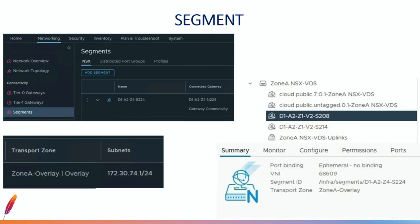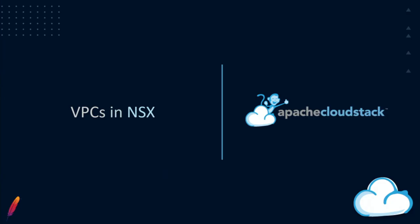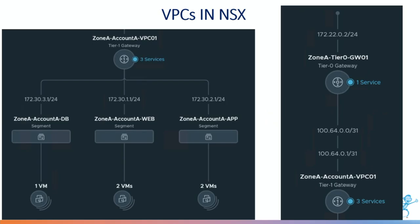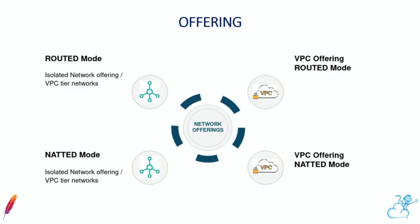NSX has the concept of segments instead of networks or port groups. Let's see how our VPC looks in NSX. The tier one gateway is the same as the virtual router, and there you have our connected networks — three tiers — with the routes advertised upstream. There are new offerings: there's the concept of routed mode and NAT mode. Classically in CloudStack you only have NAT.